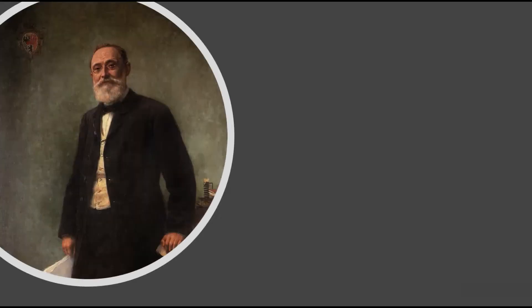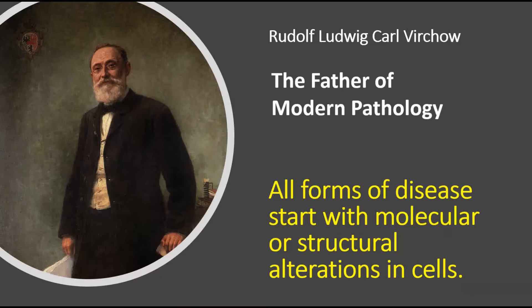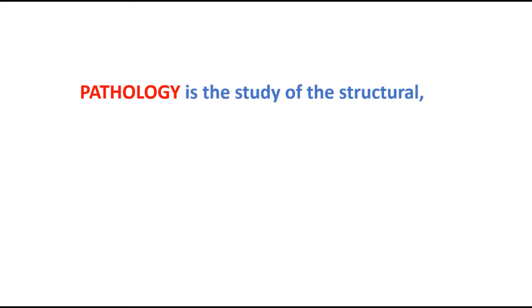This is Rudolf Virchow. Rudolf Virchow was a German pathologist, anthropologist, and biologist. He was the first one to say that all forms of disease start with molecular or structural alterations in cells, and that's why he was called the father of modern pathology.